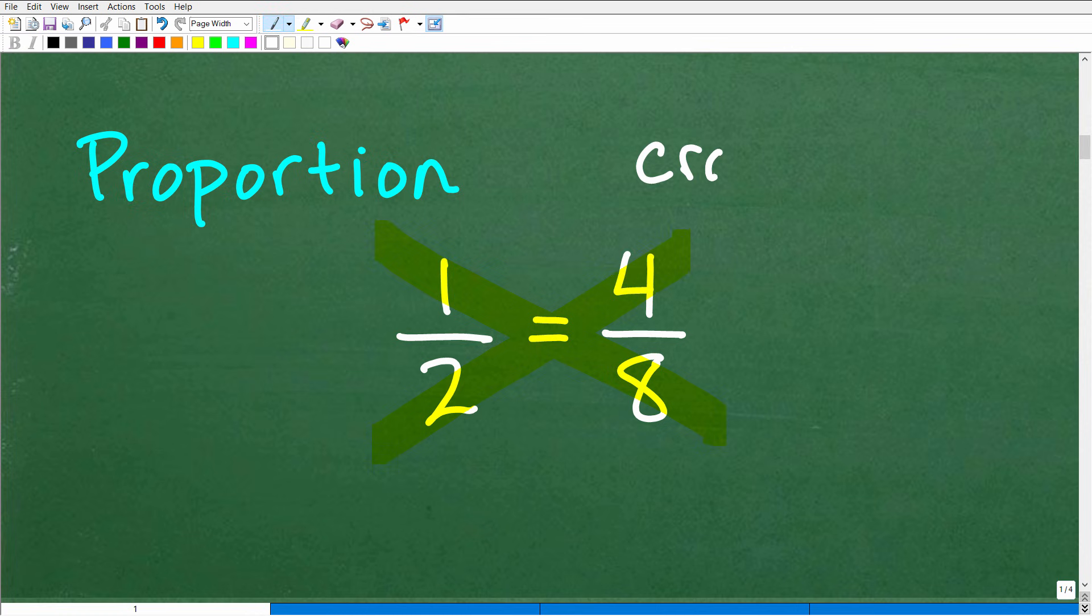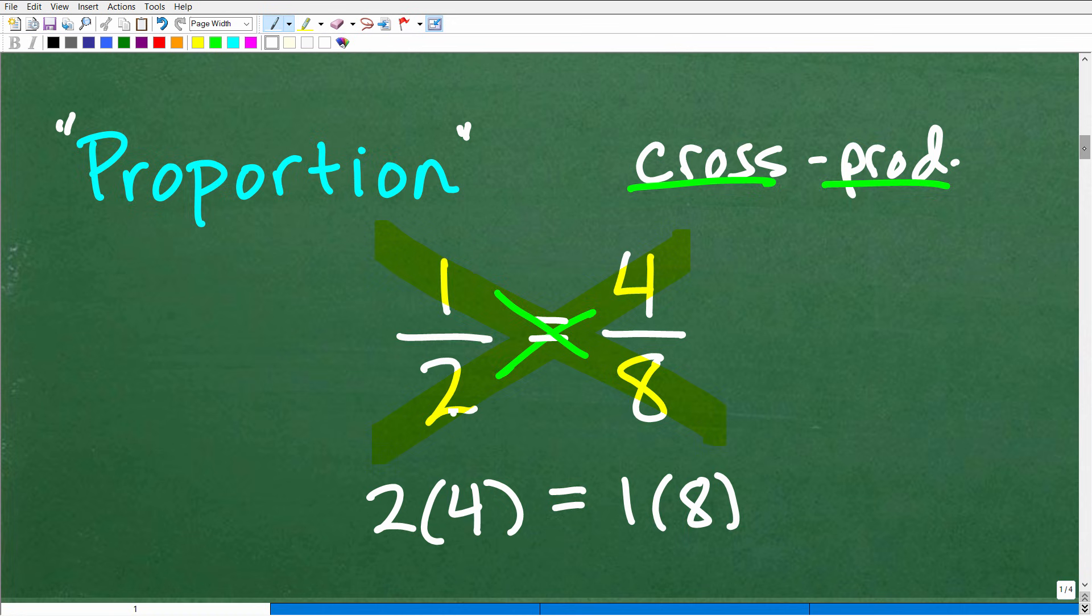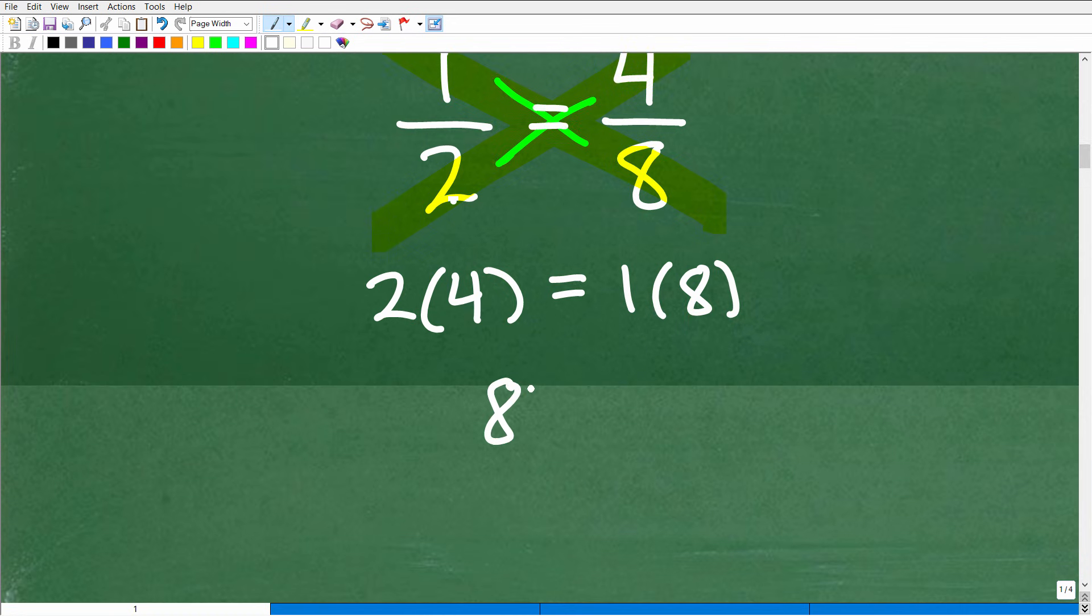I'm going to write this out here. The cross product. And hopefully you know what the cross product is. It's effectively multiplying a cross, like so, crosswise. And it's a product, i.e., we're talking about multiplication. So here, the cross product will always be true when you have a proportion. So, for example, 2 times 4, let's write that right here. 2 times 4 will be equal to, this is a cross product right here, is going to be equal to this cross product, which, of course, is 1 times 8. And we can see very clearly that 2 times 4 is 8, and 1 times 8 is 8. That is a true statement.